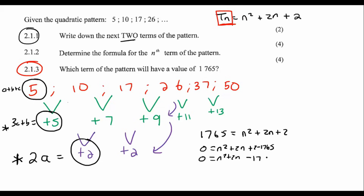You bring the 1,765 over, giving N squared plus 2N minus 1,763 equals zero. Let me just make sure: 2 minus 1,765. Then we use the quadratic formula — you know how to do that by now. We get two answers: N equals 41 or N equals negative 43. But you cannot get a negative answer for N, so therefore N is equal to 41.